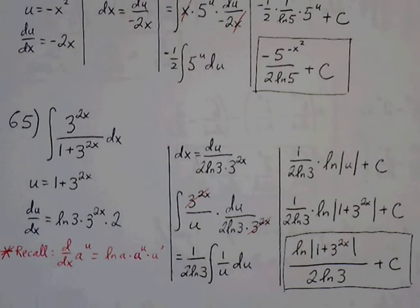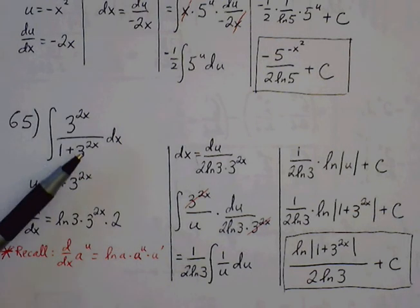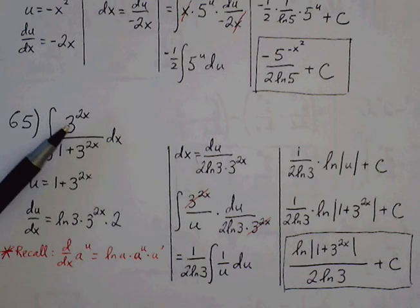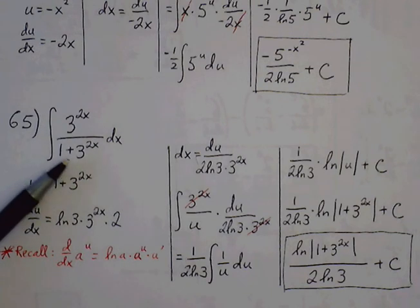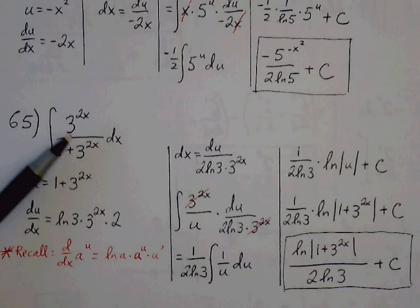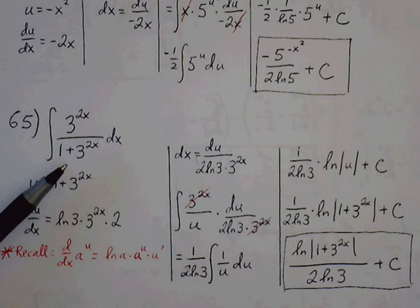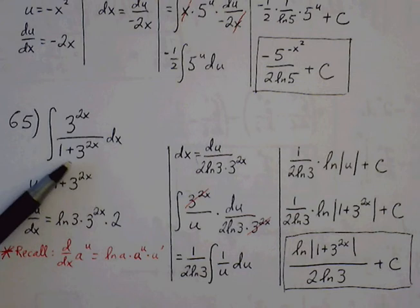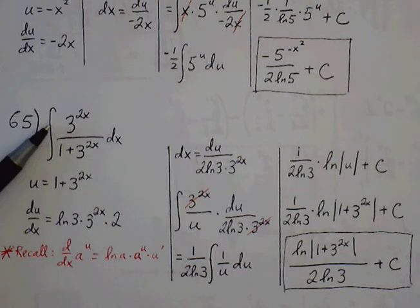Problem 65. In this case, we're not going to be able to let the u value be just 2x, because what results is 3 to the u over 1 plus 3 to the u, and we don't have a rule for a to the u over 1 plus a to the u. So we need to think about a broader assignment for u. Usually, if you have to choose between numerator and denominator, the denominator will be the better choice, simply because the numerator is easier to cancel out with the derivative.